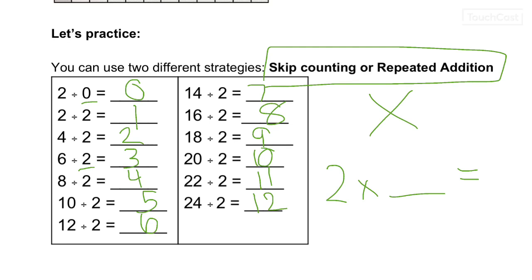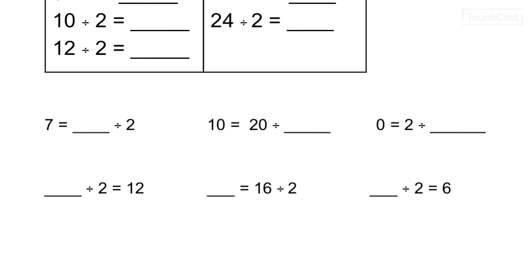So what do we do here? Instead of doing 6 divided by 2 equals blank, we said 2 times something gives us 6. These answers are going to be the exact same. But since we're getting better at our multiplication, that's what's going to help us with our division.